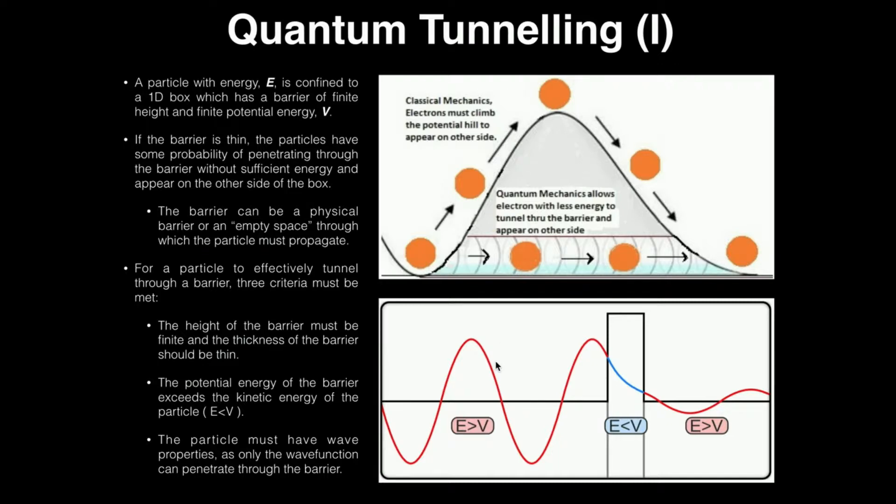But now imagine a situation where the potential energy in the well is still zero, or it's still negligible. But now the barrier is no longer infinitely high. Or in other words, it doesn't have a potential energy of infinity. Its potential energy is finite. So to put it in bullet form, a particle has some probability of tunneling if it meets a few criteria.